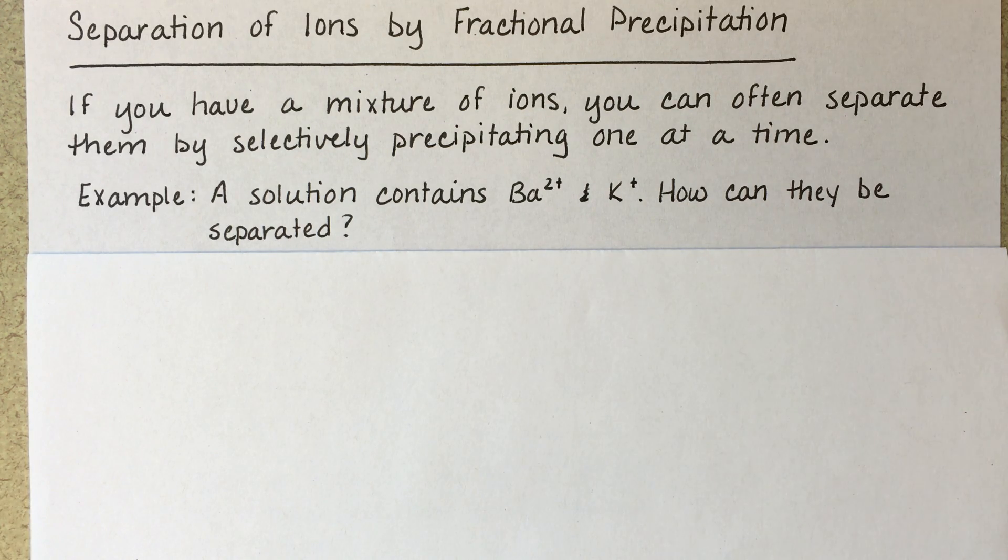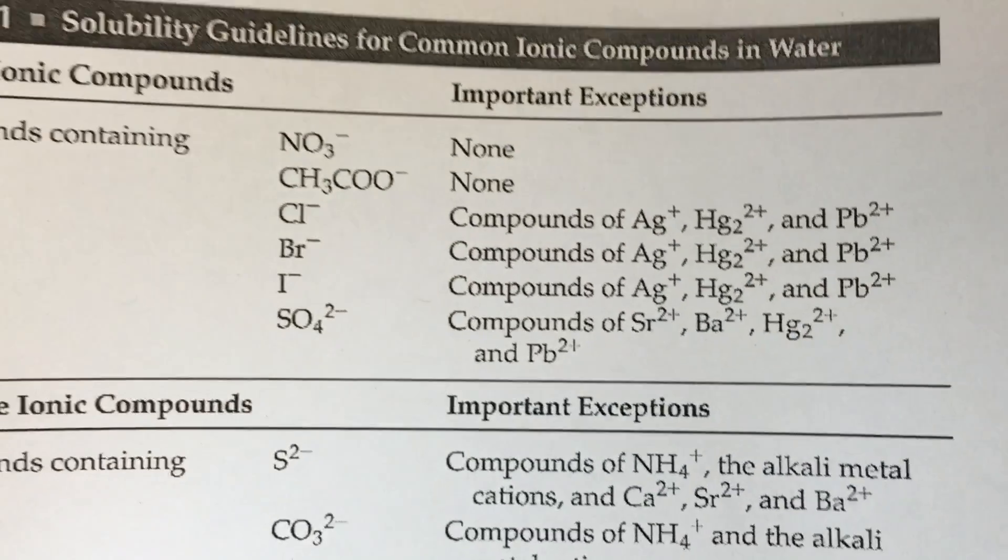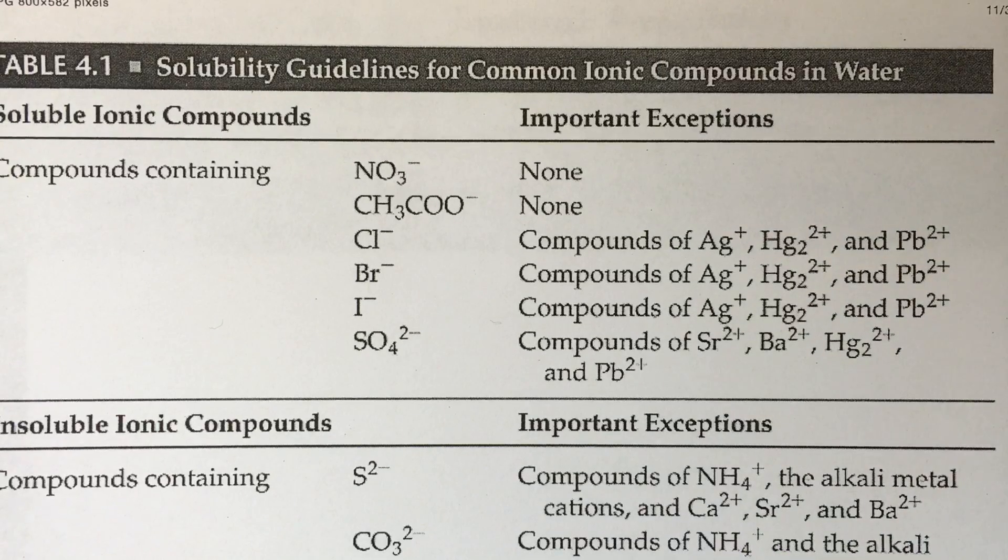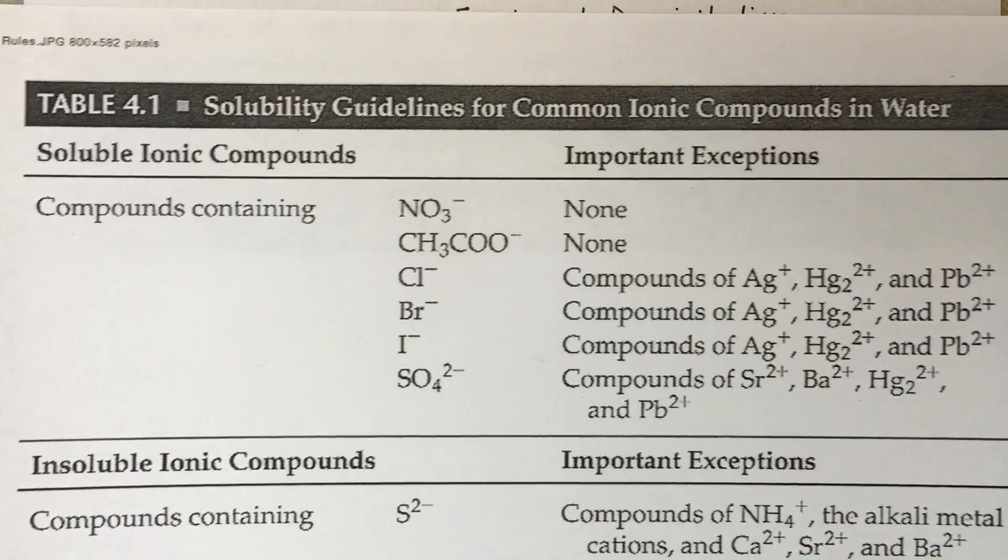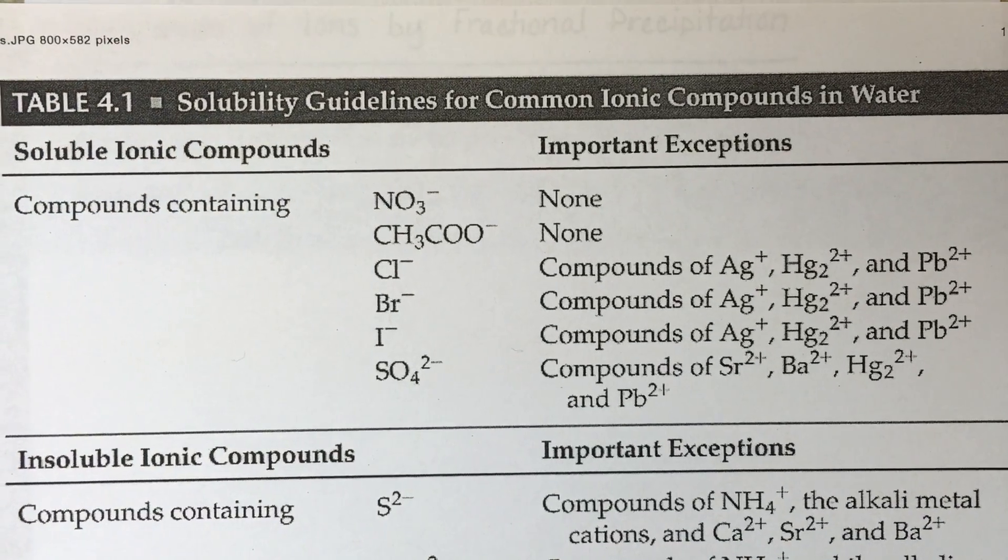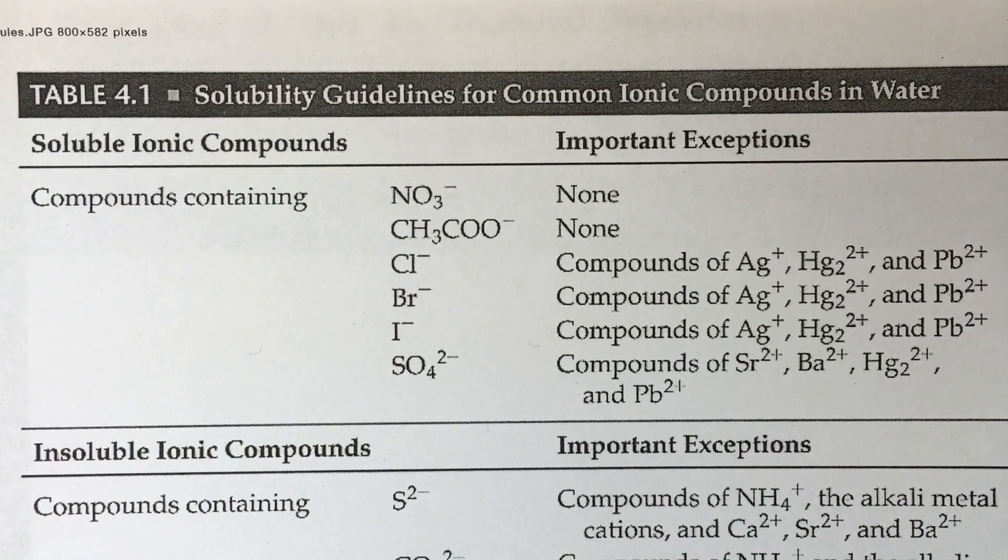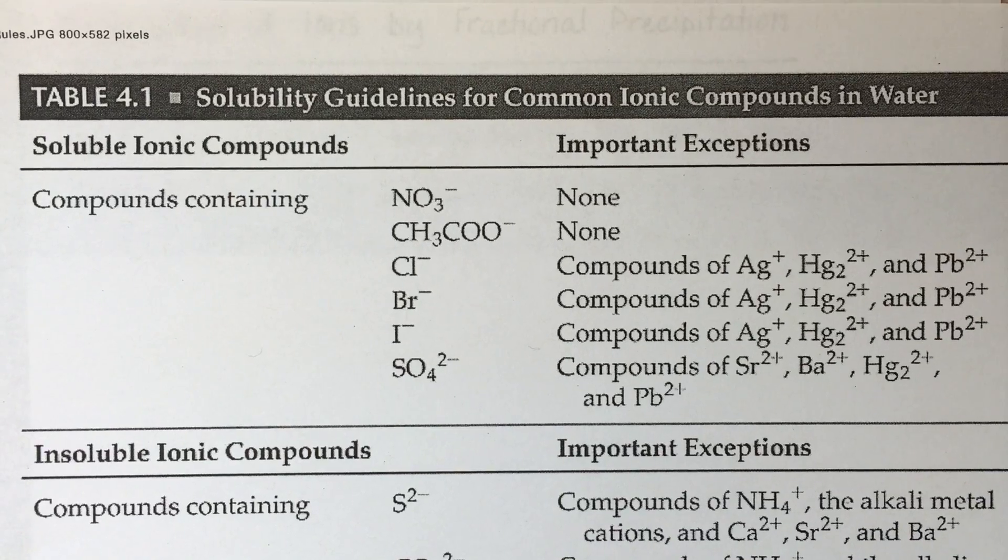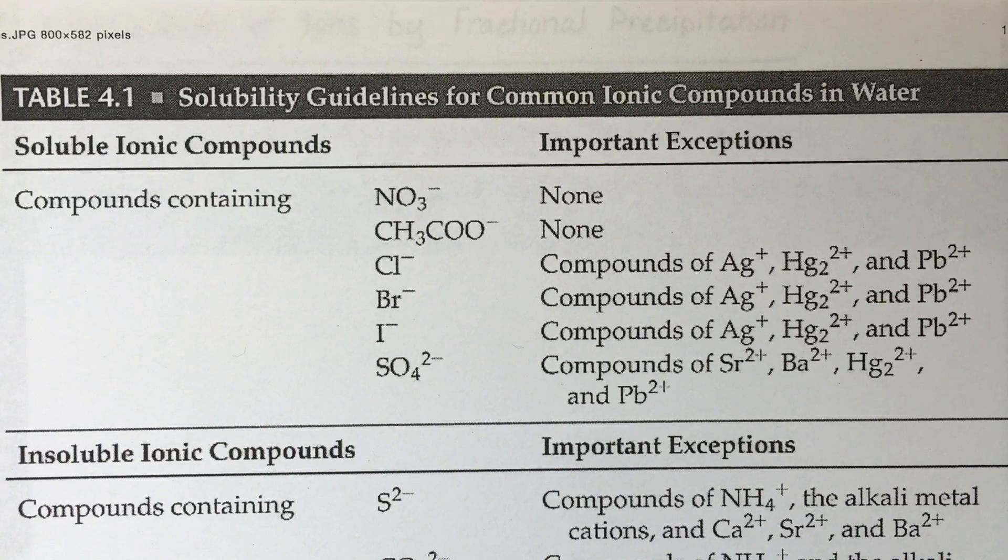There's two different ways that we can find this anion, and there's also multiple anions that we could use for this precipitation. One thing that you can do is consult your solubility rules, and this is just sort of looking for an anion that will form an insoluble solid with either barium or potassium.